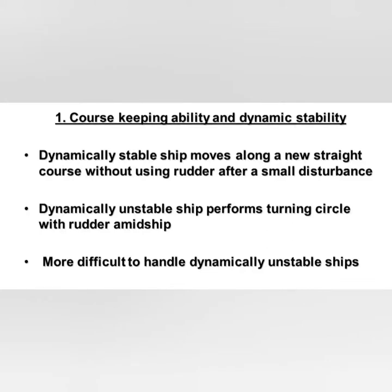Directional stability is also called dynamical stability of the ship. It is tested during the sea trials, and what it means is if a ship can move along a new straight course without using the rudder after a small disturbance, that is considered a dynamically or directionally stable ship. In comparison, a dynamically unstable ship performs a turning circle with the rudder amid ship, and it is more difficult to handle.